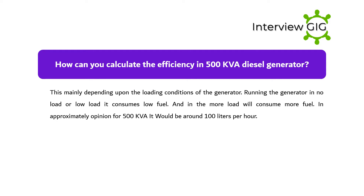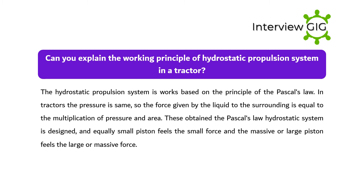How can you calculate the efficiency of a 500 KVA diesel generator? This mainly depends upon the loading conditions of the generator. Running the generator at no load or low load, it consumes low fuel, and at more load it will consume more fuel. In approximate terms, for a 500 KVA generator it would be around 100 liters per hour.